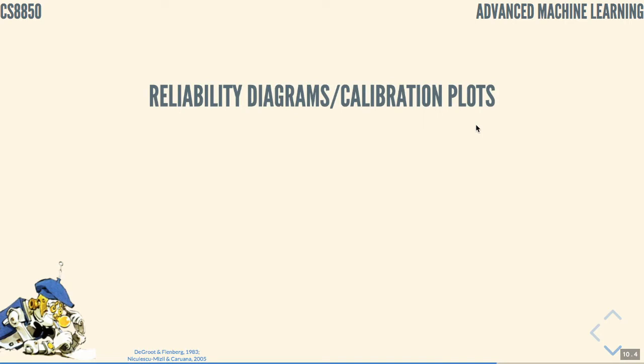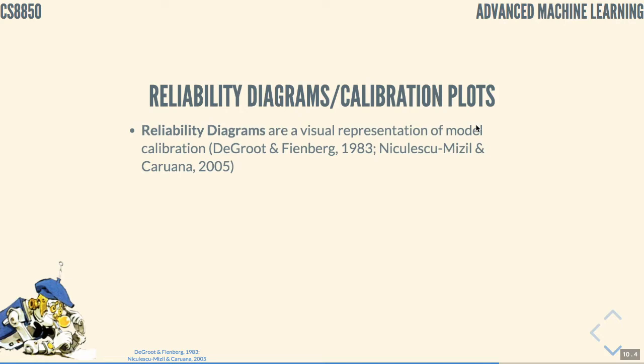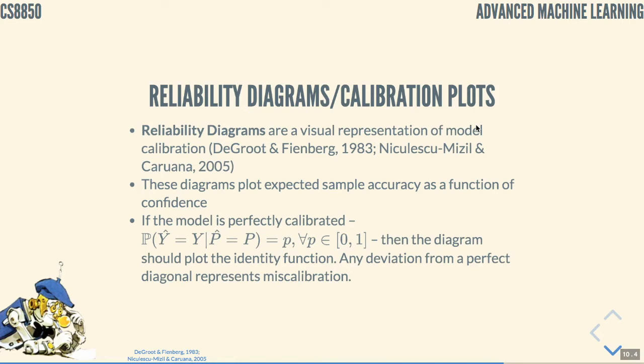For that, we have the help of reliability diagrams or calibration plots. Reliability diagrams are a visual representation of model calibration. These diagrams plot expected sample accuracy as a function of confidence that the model returns. If the model is perfectly calibrated, then probability of the predicted label being the true label at given confidence equals to that confidence. In this case, the diagram should plot the identity function, which is just a 45 degree line. Any deviation from a perfect diagonal represents miscalibration.